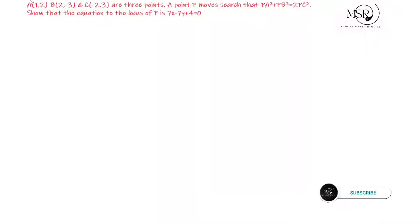A(1, 2), B(2, -3), and C(-2, 3) are three points. A point P moves such that PA² + PB² = 2PC². Show that the equation of the locus of P is 7x - 7y + 4 = 0.